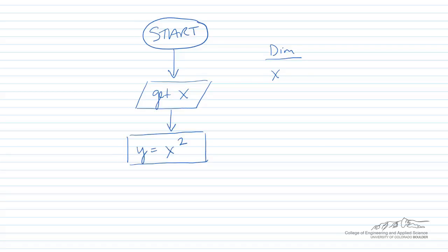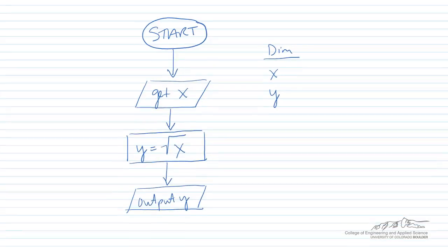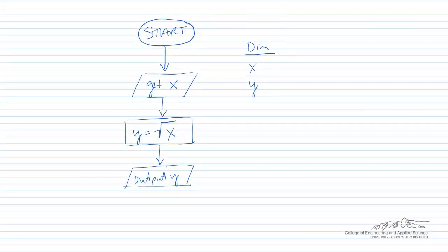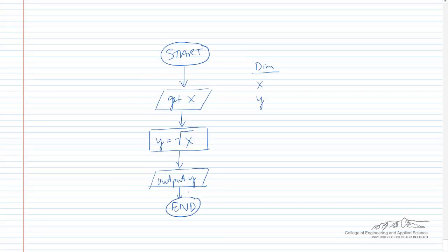Next, we're going to calculate Y, the square root of X. We also need to dim Y then. Then we output Y. We're interfacing with the user, so that's typically a parallelogram, and then we end. This is a basic flowchart for this process.